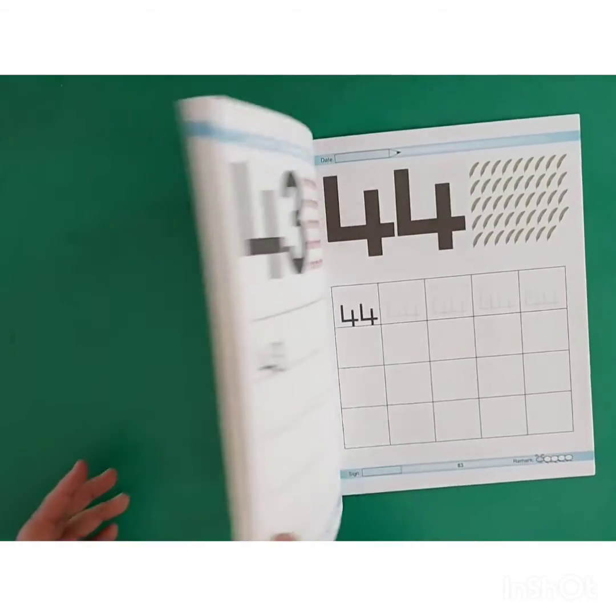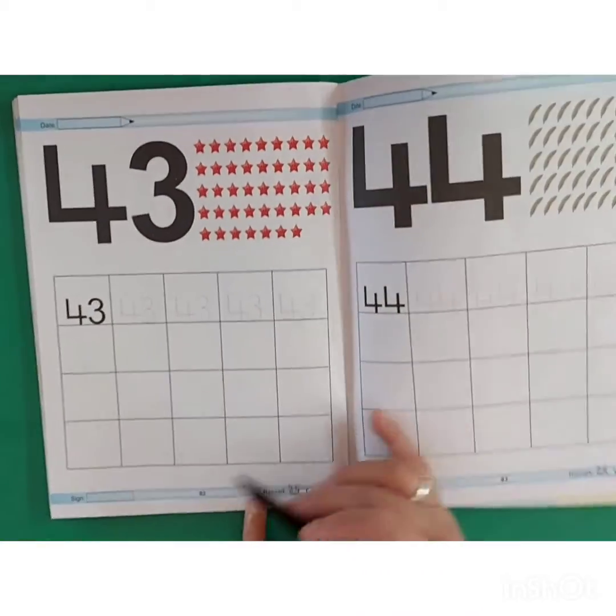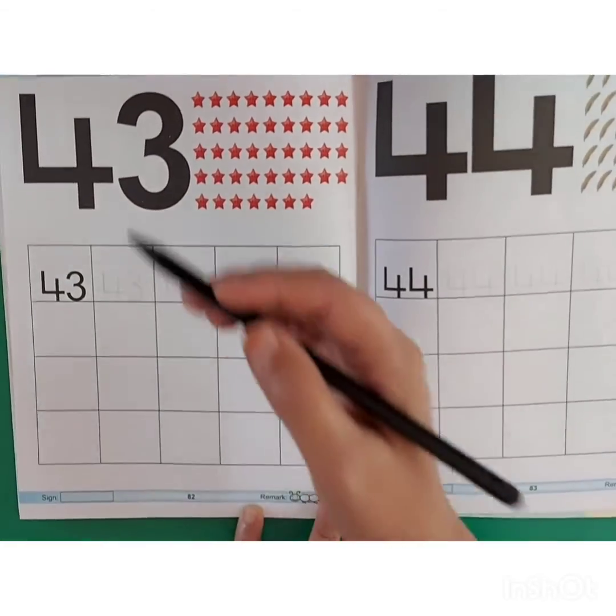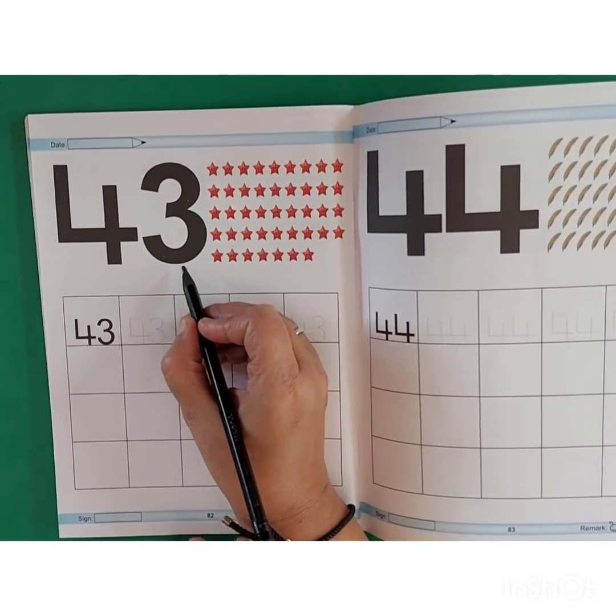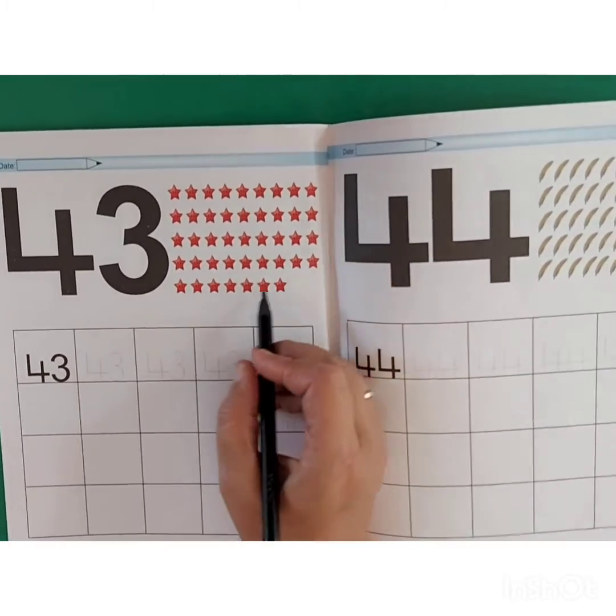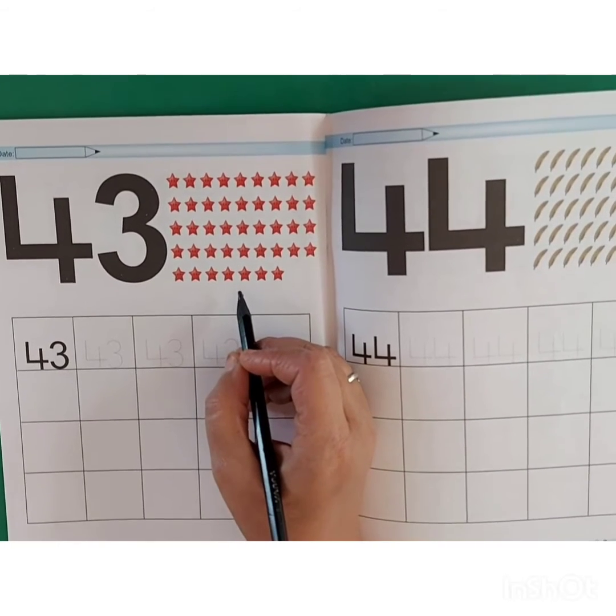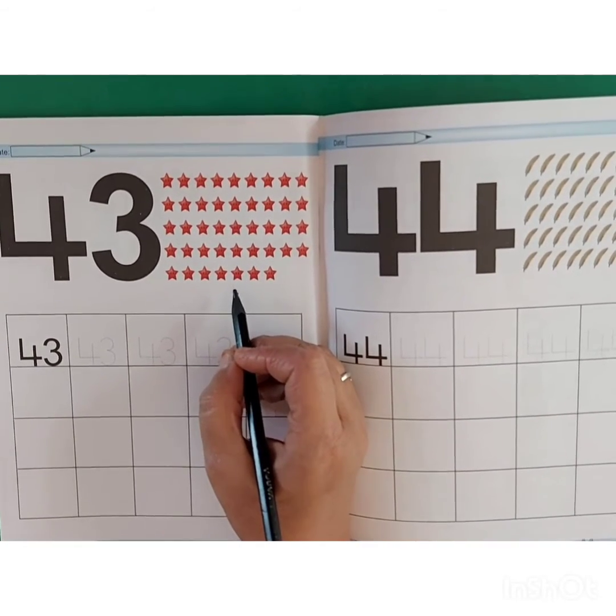Kids, in your number fun book, open page number 82. Which number is this? 43. Now, what are these? These are stars. So, let's cut and count.